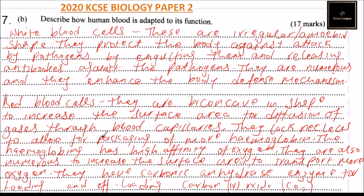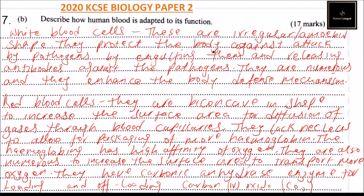The red blood cells are also a very important component of the blood — they are used to transport oxygen in the body and also for the removal of carbon dioxide, which is a waste product. If you explain the roles of red blood cells, white blood cells, platelets, and plasma, you should be able to get 17 marks. This question has a total of 20 marks.